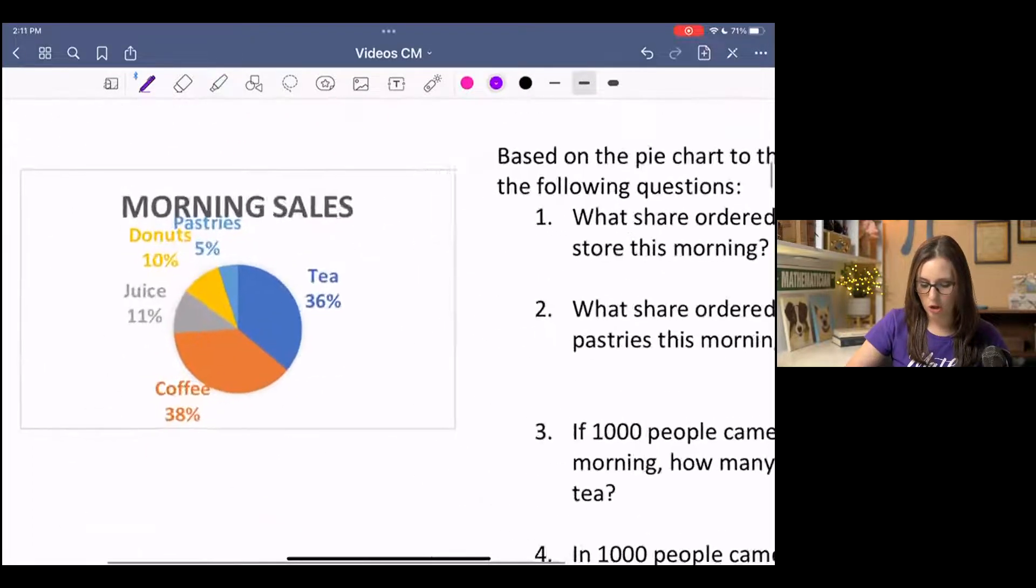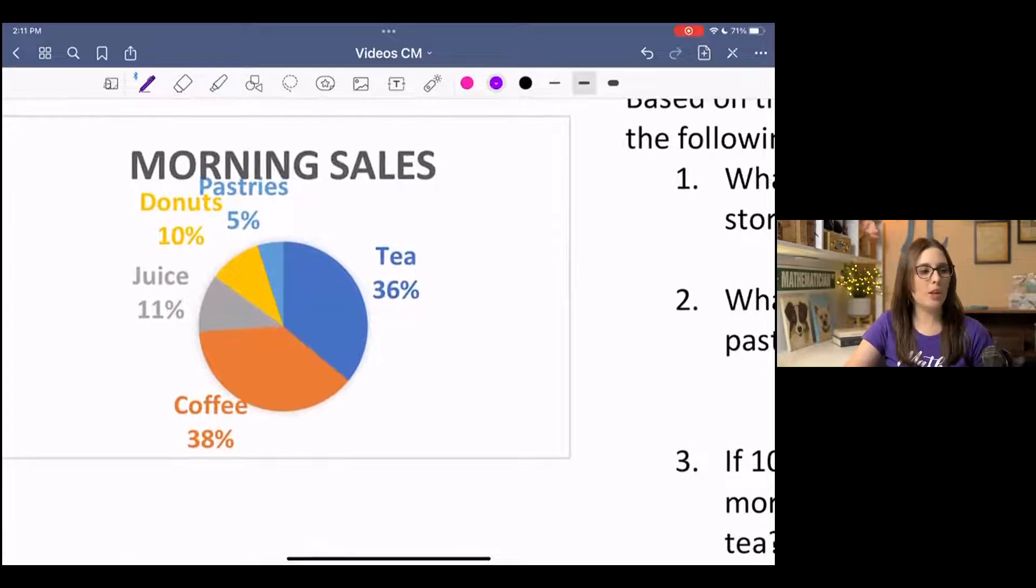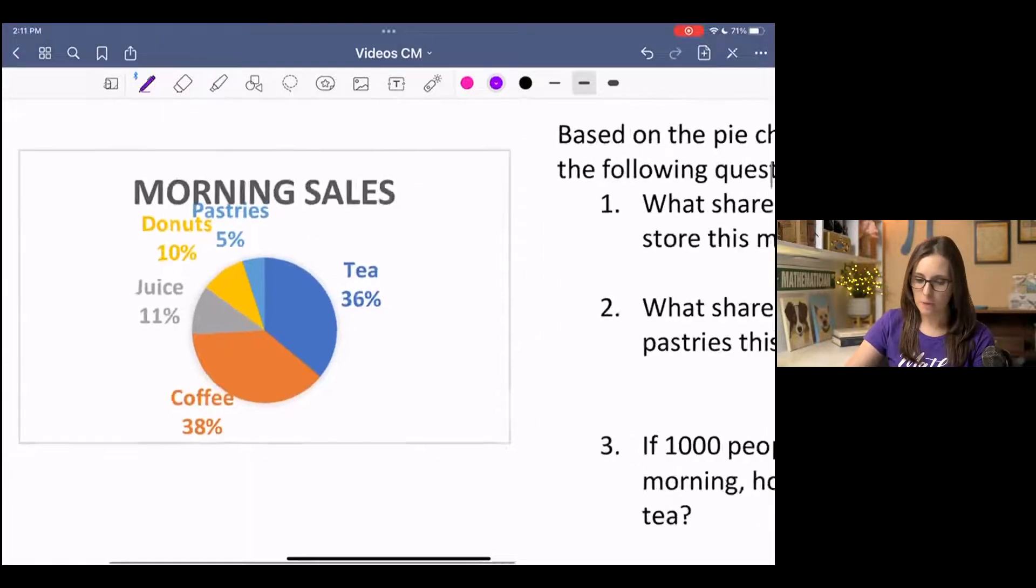So just a few hints before we get started. I have got a pie chart here of morning sales at a bakery, I guess, donut shop, maybe. And we have percentages for each category. So 36% of the people who came in ordered tea, 38% ordered coffee, and so on. So you get the gist. And then we're going to answer these questions based on that pie chart.